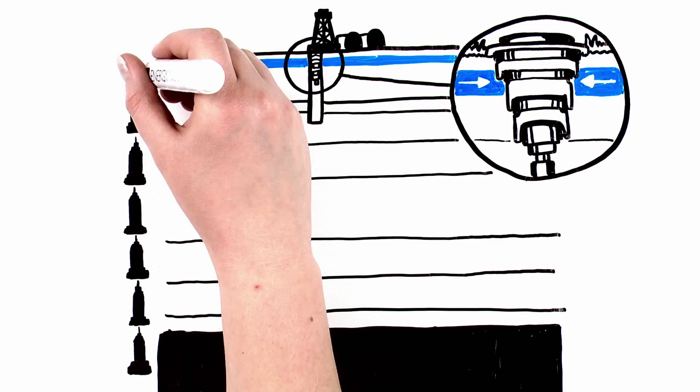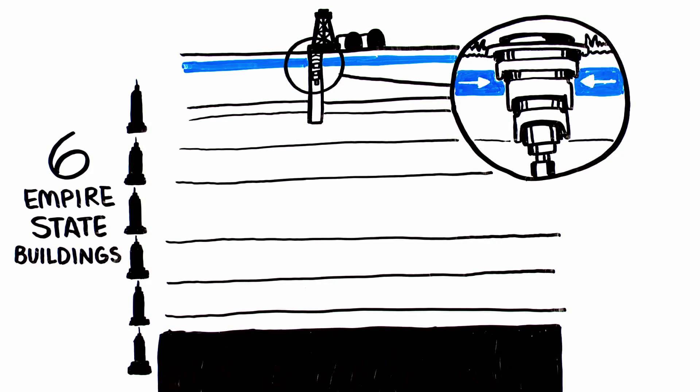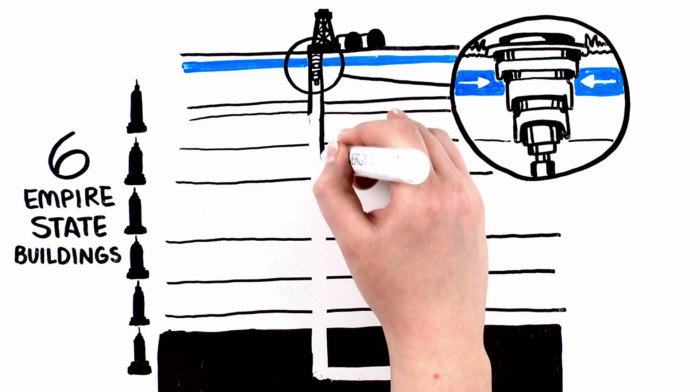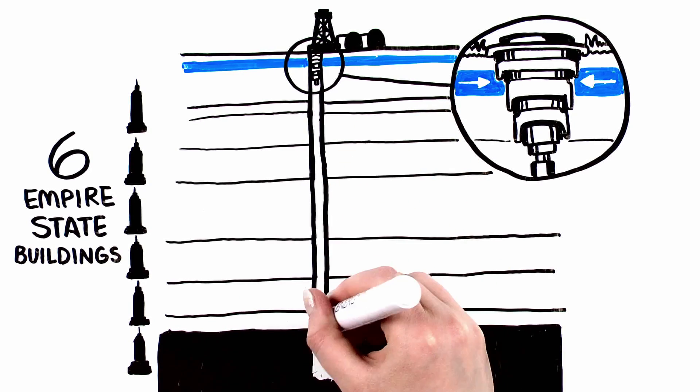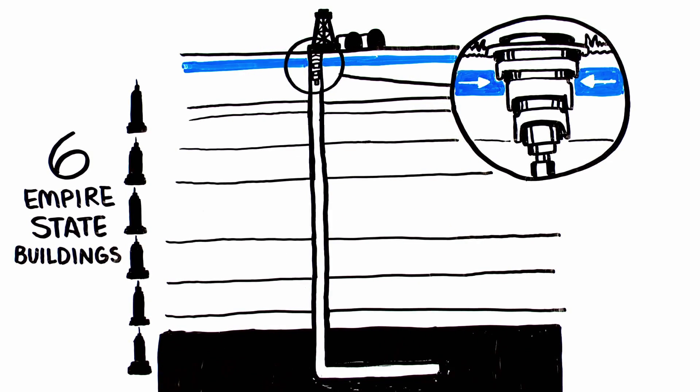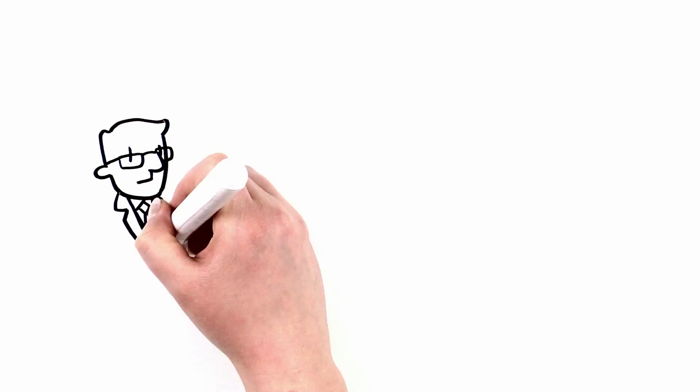The shale is around the same depth as six Empire State Buildings stacked on top of each other. Once the drill reaches the desired depth, it then turns laterally into the shale formation and extends another several thousand feet.